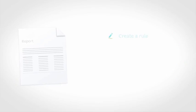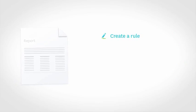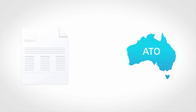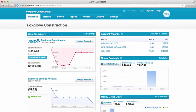Step 1: create a report rule which generates a list of contractors and their payments you want to include in the report. Step 2: check that the contractor's details and included payments are correct. And finally, Step 3: export the report from Xero to upload into the ATO portal, or use it to fill out the ATO paper report. So let's see how this is done.